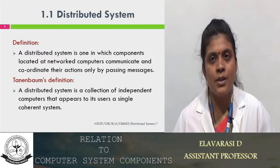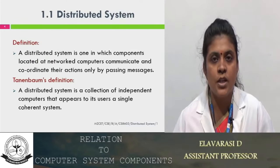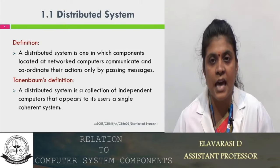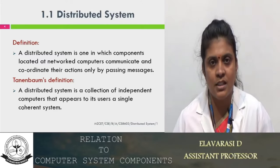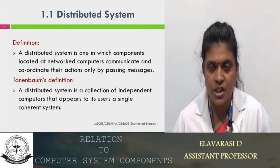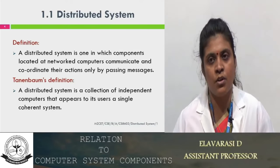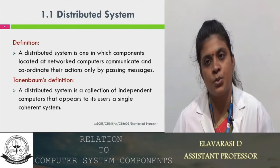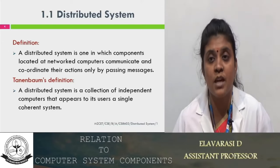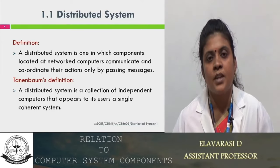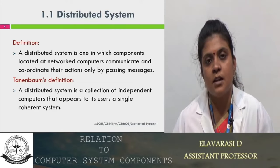Another way we can define the distributed system: it is a system in which the components located at different networks communicate and coordinate their actions only by passing messages. The communication is only through the communication network and there is no shared memory concept. The message will be passed through message passing — we call it MPI, Message Passing Interface.